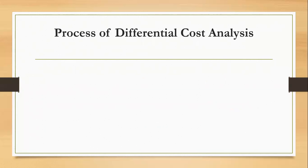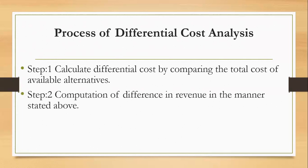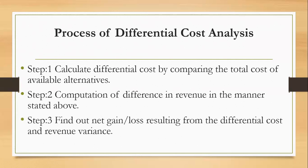Coming to the next concept, process of differential cost analysis. Before we could head to the problems in the next lecture, we would try to understand the process of differential cost analysis. It is made up of three important steps. Step one: calculate the differential cost by comparing the total cost of the alternatives which are available. Step two: compute the difference in revenue in the manner as stated above. Third step: find out the net gain or the loss resulting from the differential cost and revenue variance.